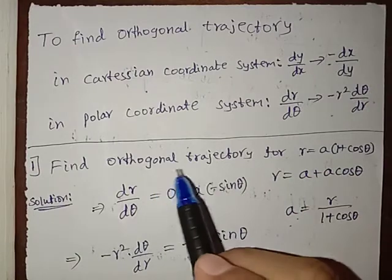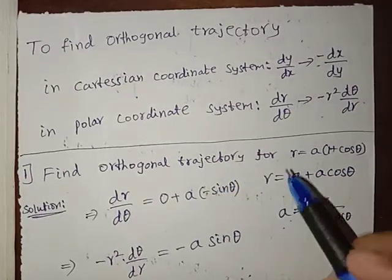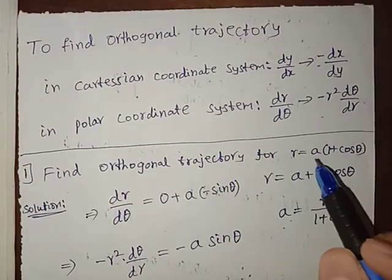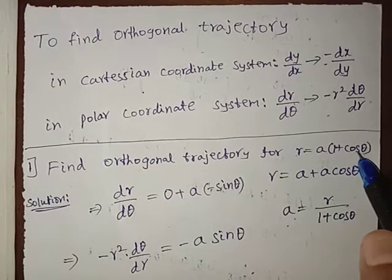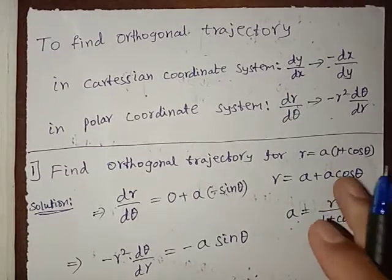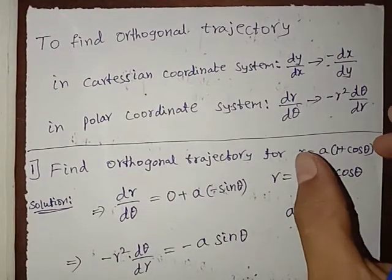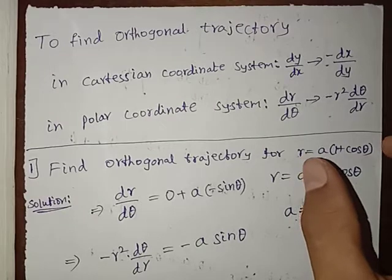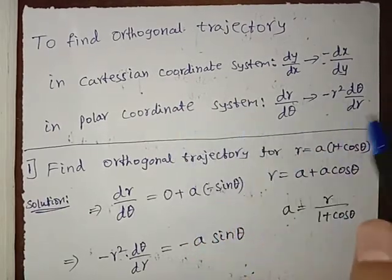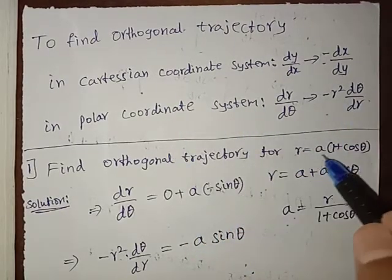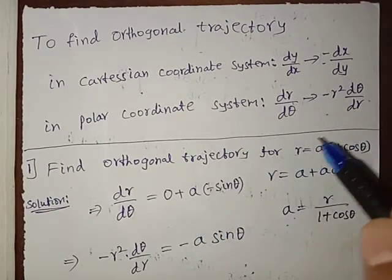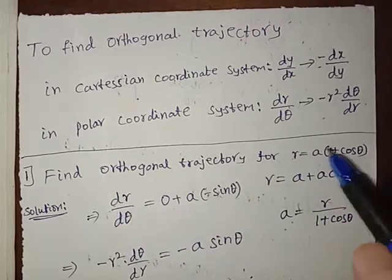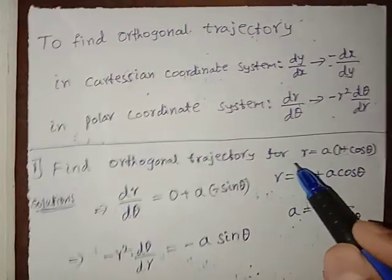For example, find the orthogonal trajectory for r = a(1 + cosθ). This is in the polar coordinate system, so first we have to differentiate this with respect to θ to get dr/dθ.